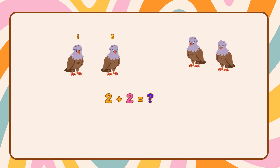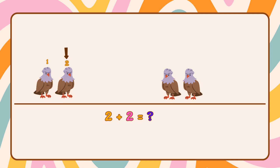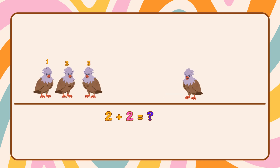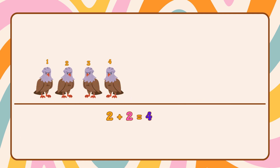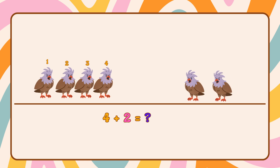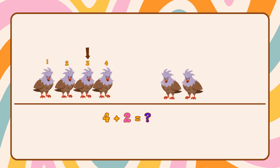Two more join them. Let's find out how many there are. One, two, three, four. So two plus two is four. Another two eagles join them — how many are there now? One...